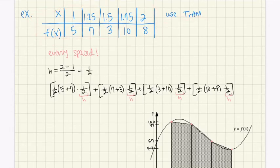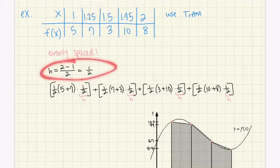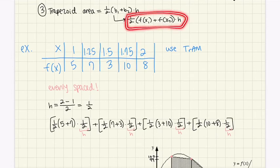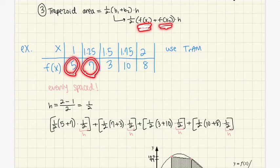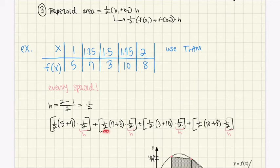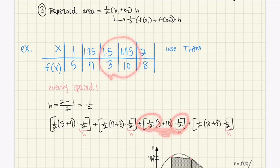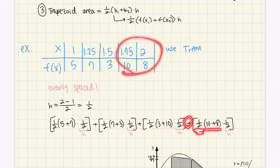Here's the data and the question asks to use TRAM. Luckily the spacing is even. Using the formula: first trapezoid is (1/2)(5 + 7) × h; second is (1/2)(7 + 3) × h; third is (1/2)(3 + 10) × h; and the last is (1/2)(10 + 8) × h. You add all four of these together to get the total approximation.